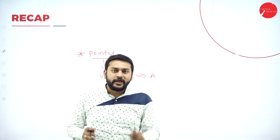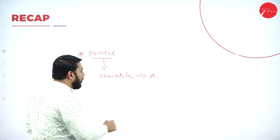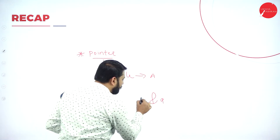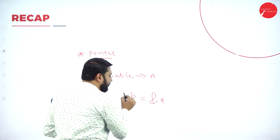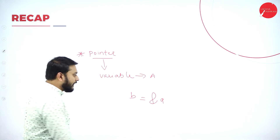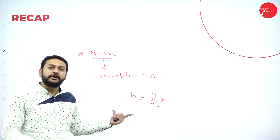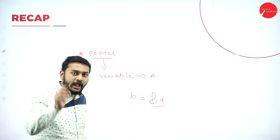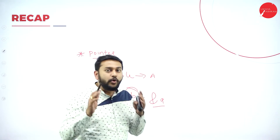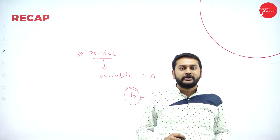How exactly will I be storing the address to a variable? The first point to remember is I will be using a symbol called ampersand. For example, if I write ampersand a, and I have variable b holding the address of a — is that a valid statement? Yes, of course it is, as long as b is a pointer variable.